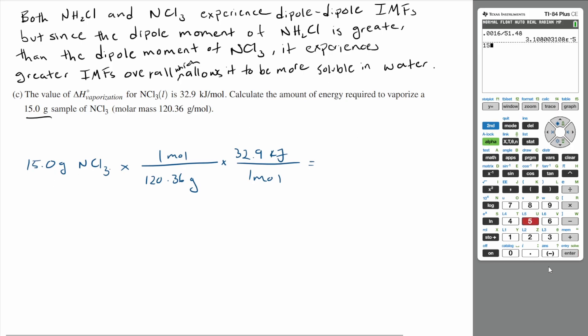We have 15 grams divided by 120.36, and then times 32.9 kilojoules, that gets us 4.1 kilojoules of energy. So it takes 4.1 kilojoules of energy to vaporize a 15 gram sample of NCl3.